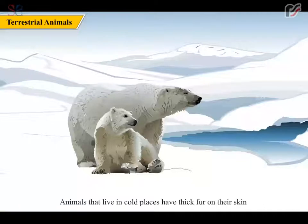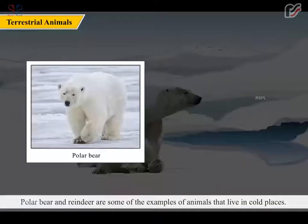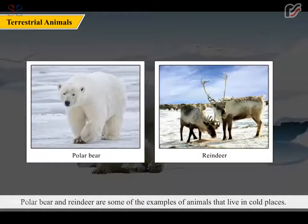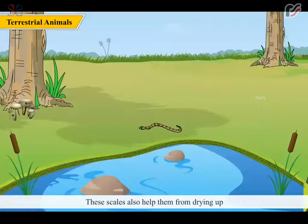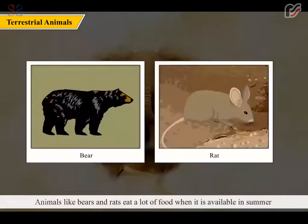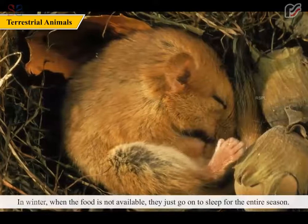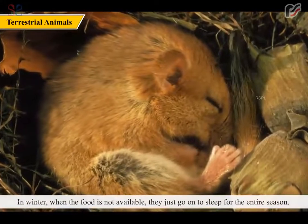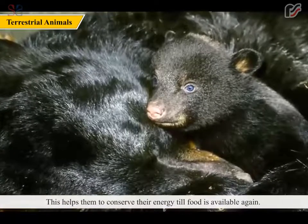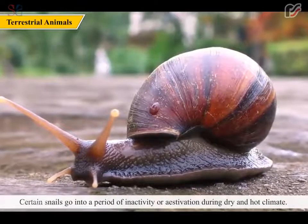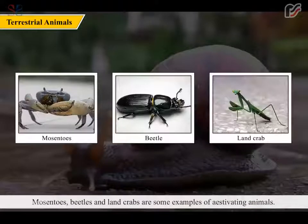Animals that live in cold places have thick fur on their skin, and some of them are white in color and merge with their surroundings to escape from their enemies. Polar bears and reindeer are examples of animals that live in cold places. Snakes crawl with the help of the scales on their lower bodies; these scales also help them from drying up. Animals like bears and rats eat a lot of food in summer and store it as fat under their skin. In winter, when food is not available, they sleep for the entire season — this is called hibernation. Certain snails go into a period of inactivity called estivation during dry and hot climate. Moss beetles and land crabs are some examples of estivating animals.